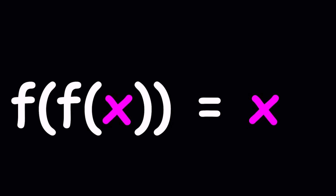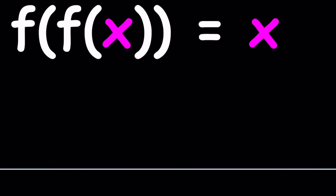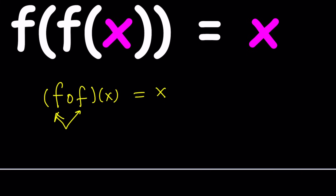When you have a problem like this, you're probably thinking: I could write this as f composition f of x equals x. So these two f's kind of cancel each other out. Doesn't this mean f inverse is equal to f? So we're looking for a function whose inverse equals itself. Yes, and this is helpful. It's a little better than f of f of x because composing a function with itself is kind of hard.